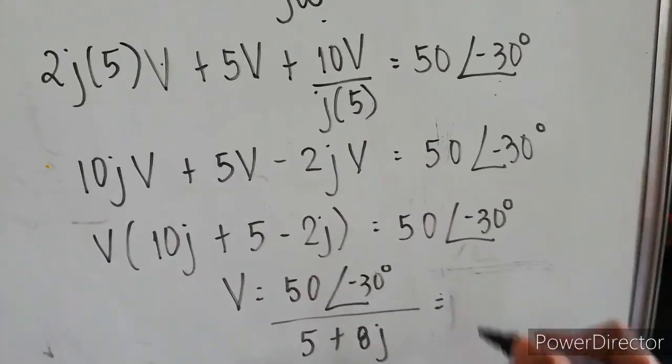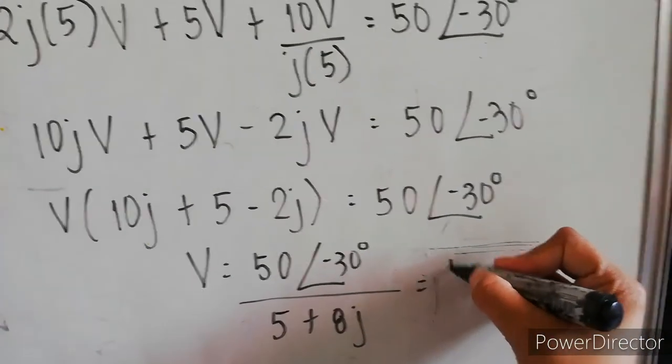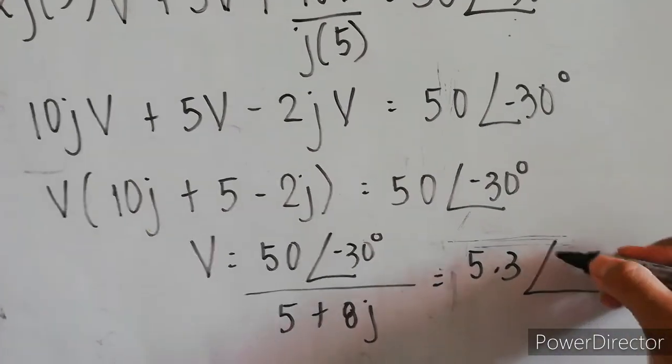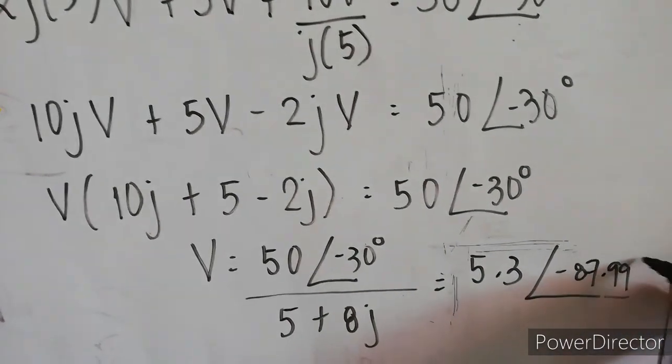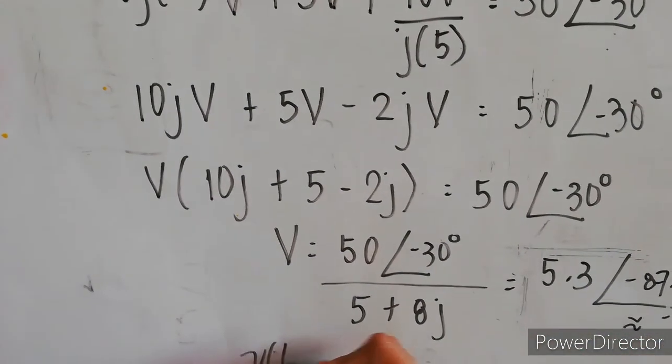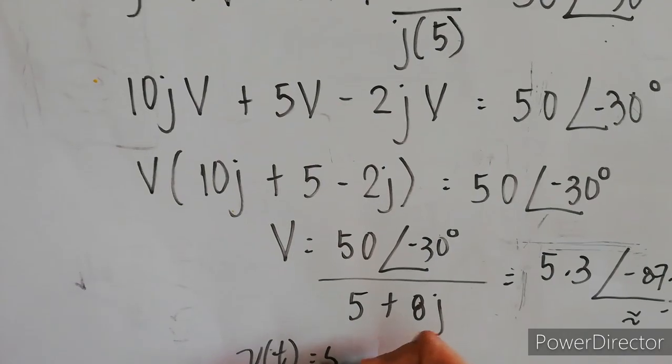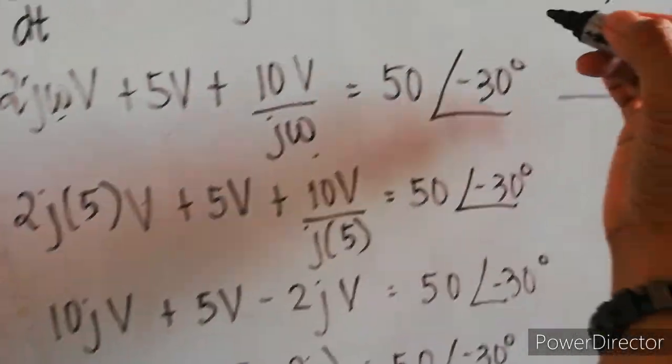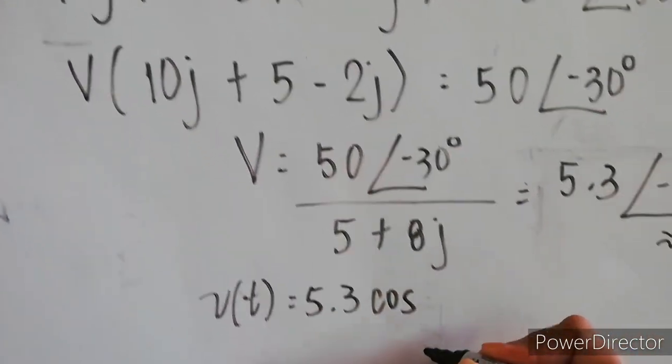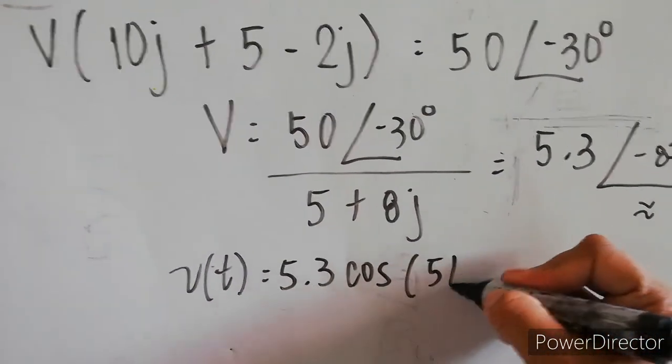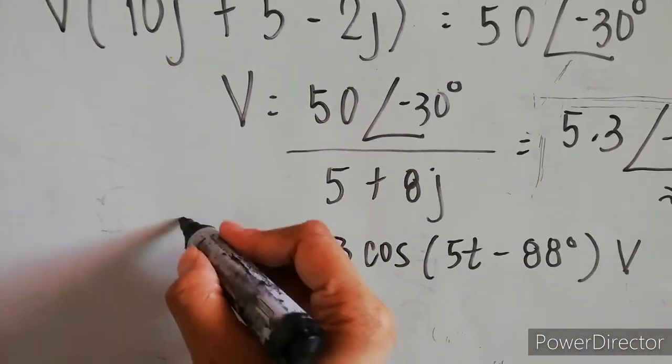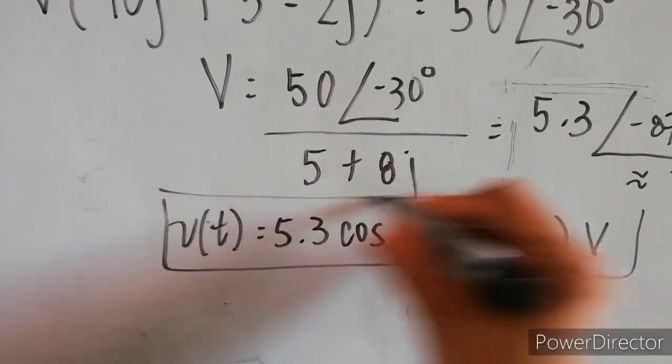That is equal to 5.3∠-87.99° or -88°. So, in time domain, we have V(t) = 5.3cos(5t - 88°) volts. That is our final answer.